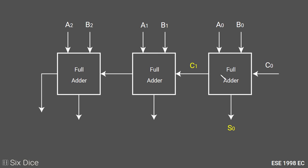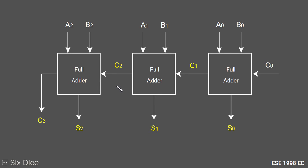The second full adder takes the carry output of the first full adder as its carry input along with the second bits A1 and B1, generating C2 and S1. The third full adder takes C2 along with A2 and B2, producing the final carry and sum digit S2. Each full adder depends on the previous full adder's carry output, which is why time delay increases as the number of bits increases. To eliminate this ripple carry effect, we use a carry lookahead adder.